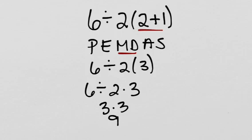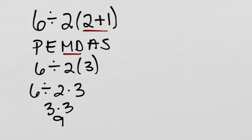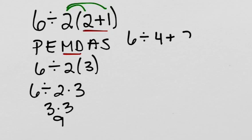So what would happen if we addressed the parentheses differently? If we addressed the parentheses differently and use the distributive property, which should apply to all real numbers, we would first distribute in the 2 to both the 2 and the 1. In this case, we would get 6 divided by 4 plus 2.